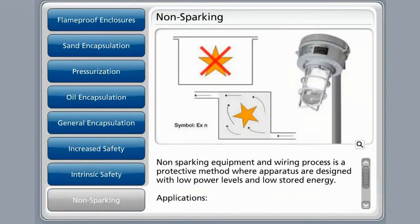Non-sparking equipment is a protective method where apparatuses are designed with low power levels and low stored energy. This ensures that any arc produced during normal functionality or as a result of equipment failure has insufficient energy to ignite the hazardous atmosphere. The general application for non-sparking protective methods would be used for motors, lighting, junction boxes, and electrical equipment.